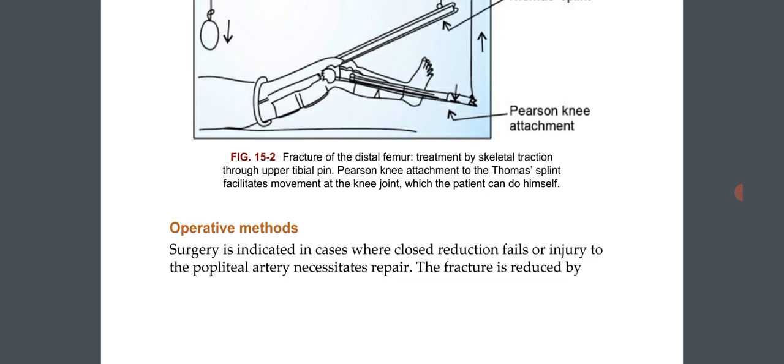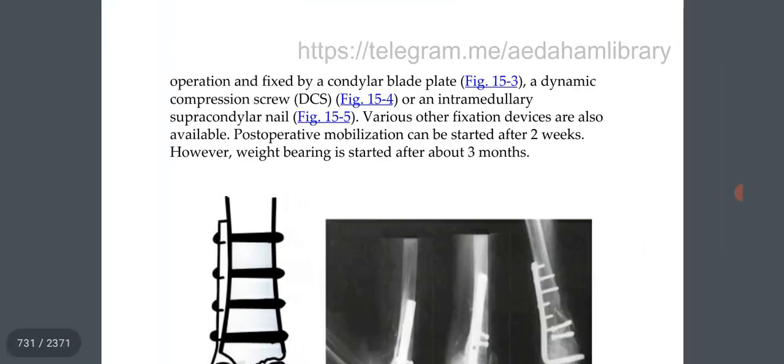Operative methods: surgery is indicated in cases where closed reduction fails or injury to the popliteal artery necessitates repair. The fracture is reduced by operation and fixed by a condylar blade plate, a dynamic compression screw, or an intramedullary supracondylar nail. Various other fixation devices are also available.